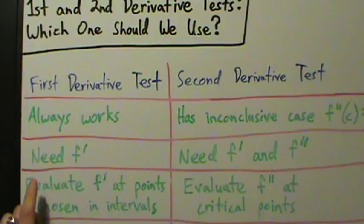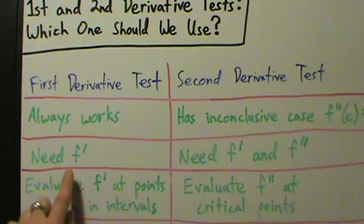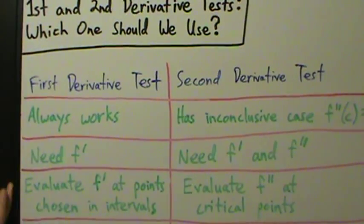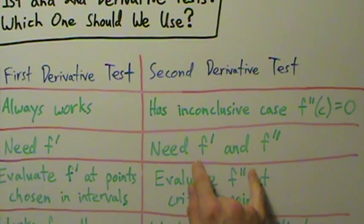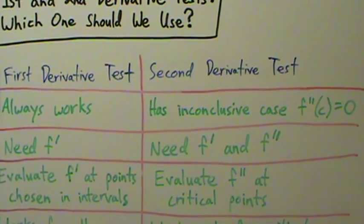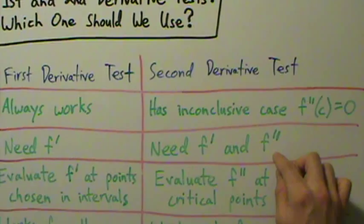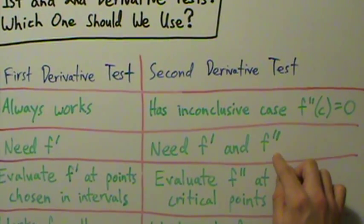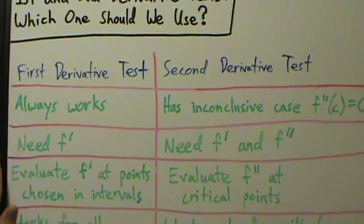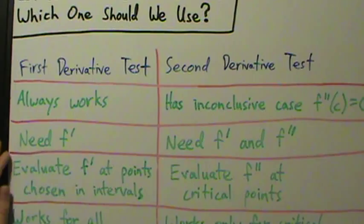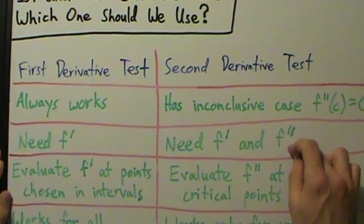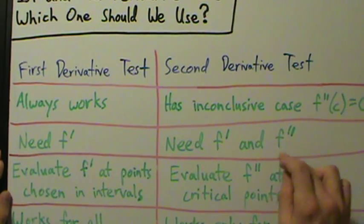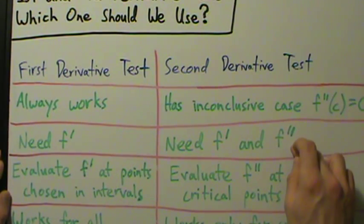Also, for the first derivative test, all you need is the first derivative. But for the second derivative test, you need f prime and f double prime — you have to have the first two derivatives. Most of the time getting the second derivative isn't really too bad, but it is an extra step of work. So it's kind of an advantage for the first derivative test again.